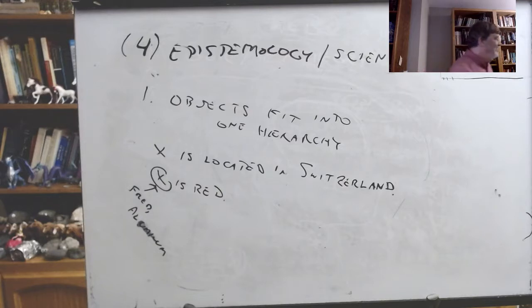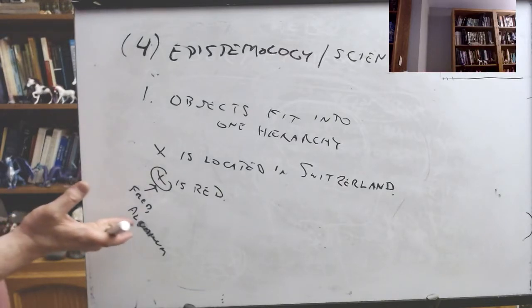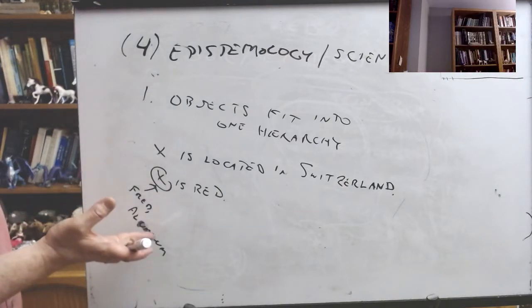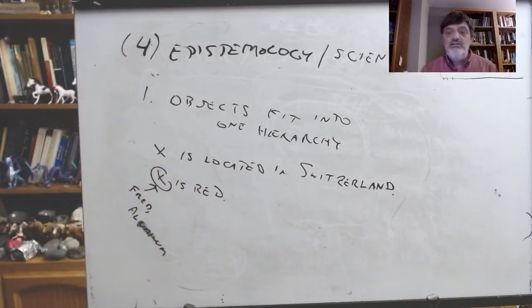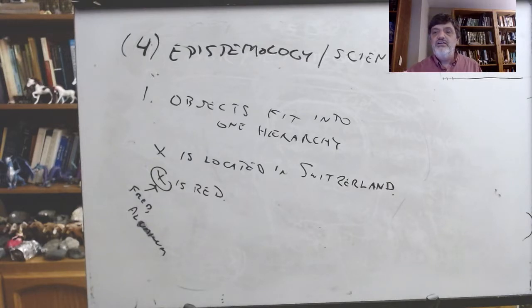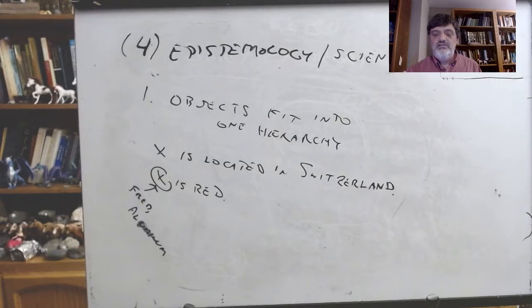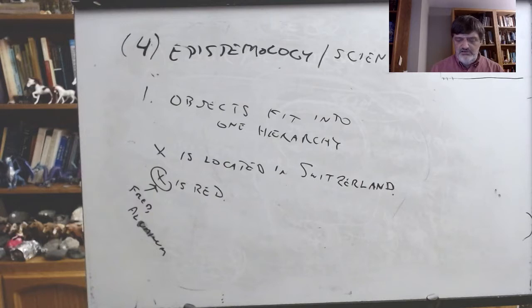A student asks about the difference between type and sphere, since Carnap talks about how sphere is logically defined while type is practically defined on page 65. The professor looks it up and notes it's actually in section 38, page 67 — the last sentence of that paragraph, where Carnap differentiates types from spheres.